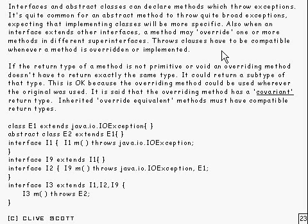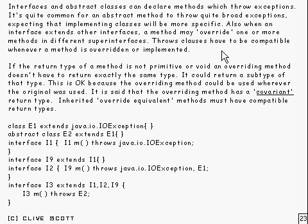Interfaces and abstract classes can declare methods which throw exceptions. It's quite common for an abstract method in an interface or abstract class to throw quite a broad range of exceptions, expecting that any implementing classes are going to be more specific. Also, when an interface extends other interfaces, a method may override one or more methods in different superinterfaces, and the throws clauses have to be compatible whenever a method is overridden or implemented.